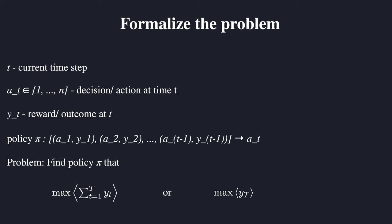Choosing what to optimize for is very interesting and has effects on the policy. For example, optimizing for the final reward means the agent doesn't have to care about intermediate rewards and can fully go into exploration and learn as much as possible. Whereas in the first case, it has to collect as many rewards as possible along the way. So let's now get to the solution, or rather one possible solution.